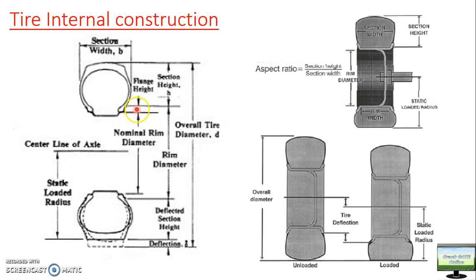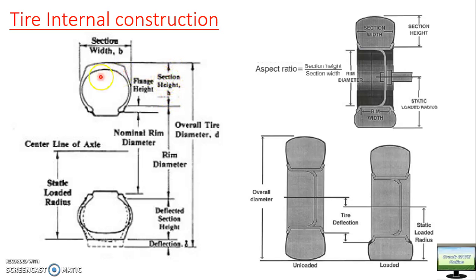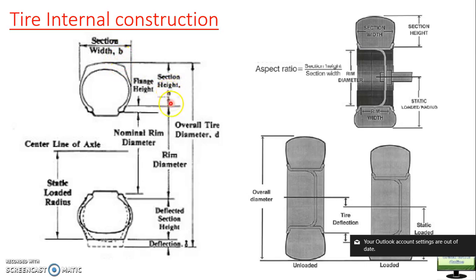There will be some metal construction over here which we call the flange, so this will be your flange height. From here your tire rubber construction will start, and this area we call the section height of the tire. These are very important terms — please note them down and sketch this figure. This width of the section is called section width, noted as small 'b'; section height is noted as small 'h'.